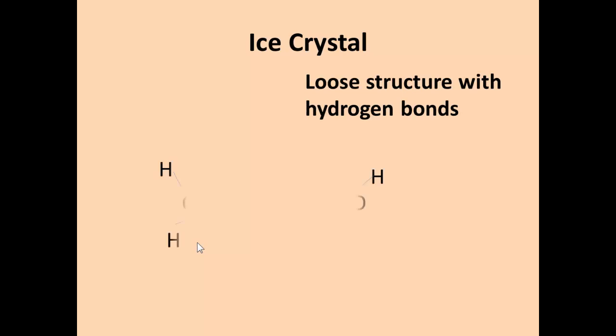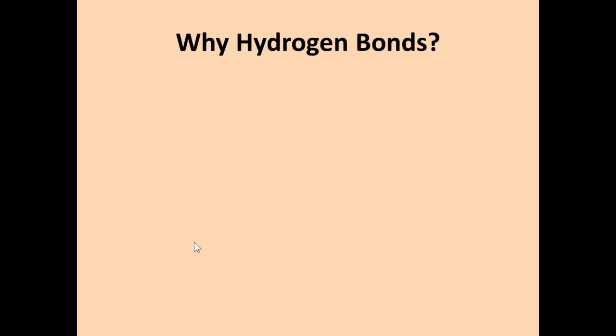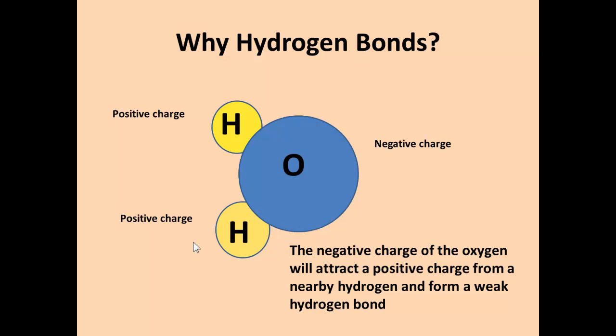You have a loose structure with hydrogen bonds. Why hydrogen bonds? It's because the negative charge of the oxygen attracts a positive charge from nearby hydrogen, and that gives you the weak hydrogen bond.